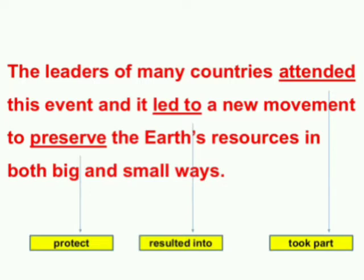What do you understand by the words 'big and small ways'? It means it is the responsibility of all of us together. Leaders of different countries will take big steps, and at a smaller level, we all have to work together to help them.